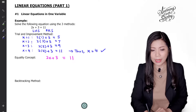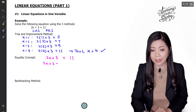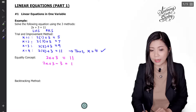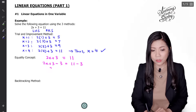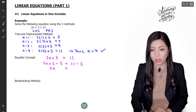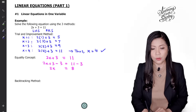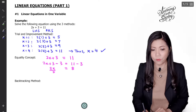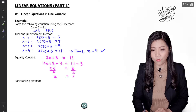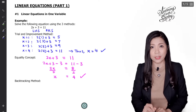To eliminate the plus 3, I'm going to minus 3 from both sides — the 3 will be eliminated, giving 2x equals to 11 minus 3, which is 8. Next, I'm going to eliminate the 2 by dividing both sides by 2. Therefore x equals to 4. We got the answer.